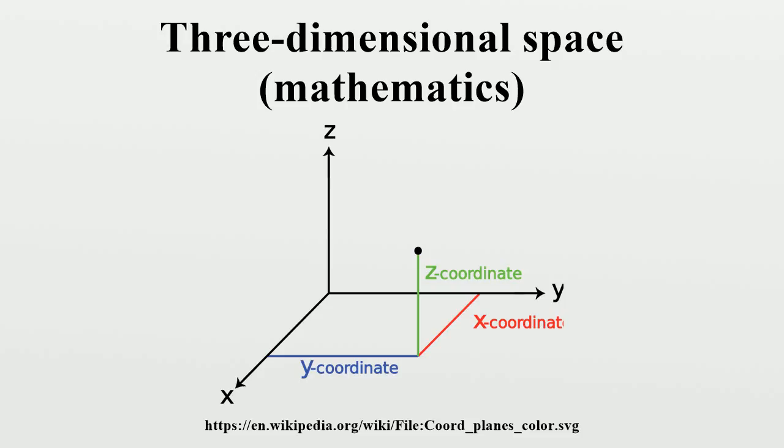Other popular methods of describing the location of a point in three-dimensional space include cylindrical coordinates and spherical coordinates, though there is an infinite number of possible methods. See Euclidean space. Below are images of the above-mentioned systems: Cartesian coordinate system, cylindrical coordinate system, spherical coordinate system.